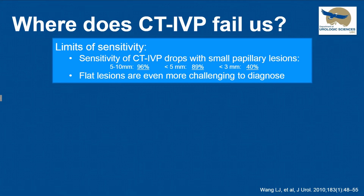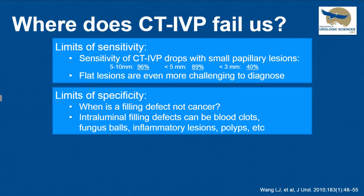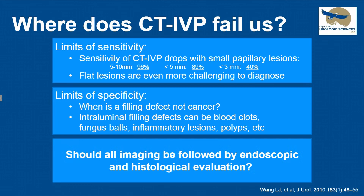Where does CT fail us? It fails us with respect to sensitivity in small tumors. 96% of tumors between 5 and 10 millimeters will be found by CT, but that drops to 40% for tumors less than 3 millimeters. Also, flat lesions are difficult or even impossible to detect by CT. Specificity is critical — if we see a filling defect, is it automatically cancer? The answer is no. There are alternative lesions to consider, and it's important to figure out how often CT will be incorrect.